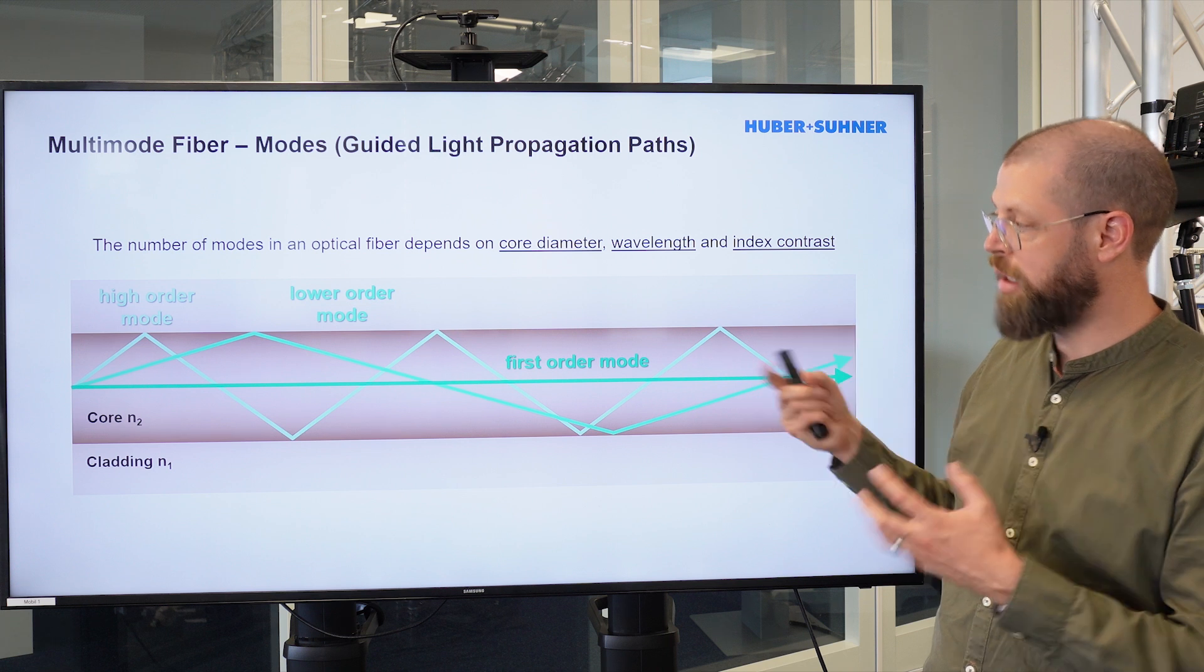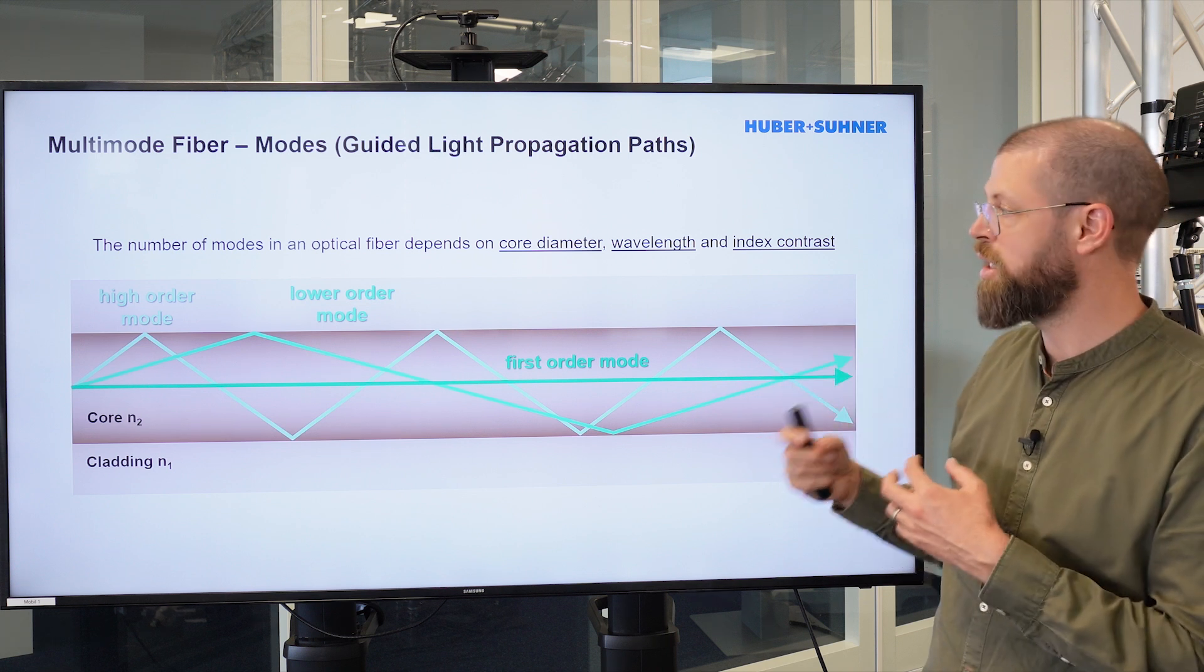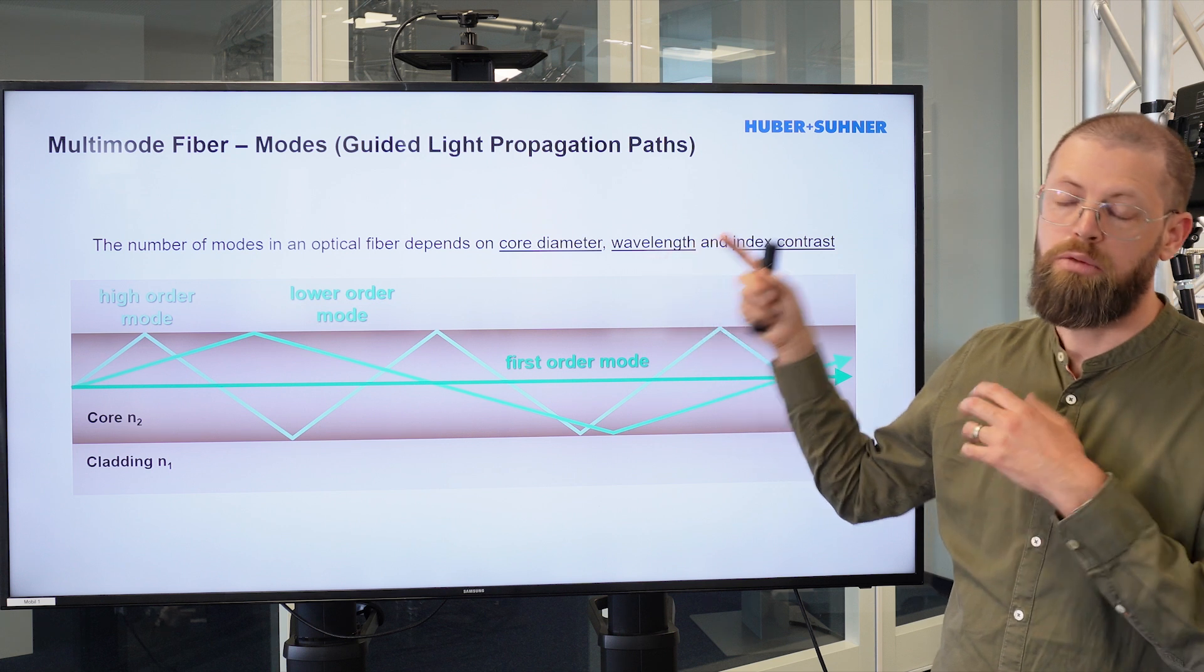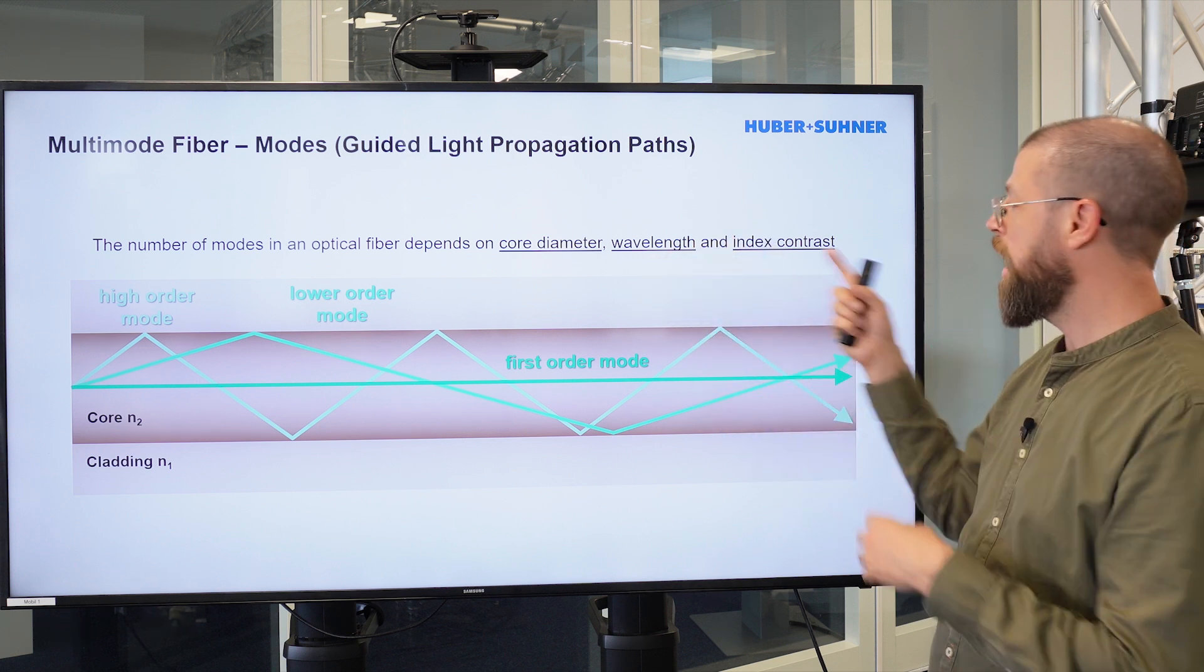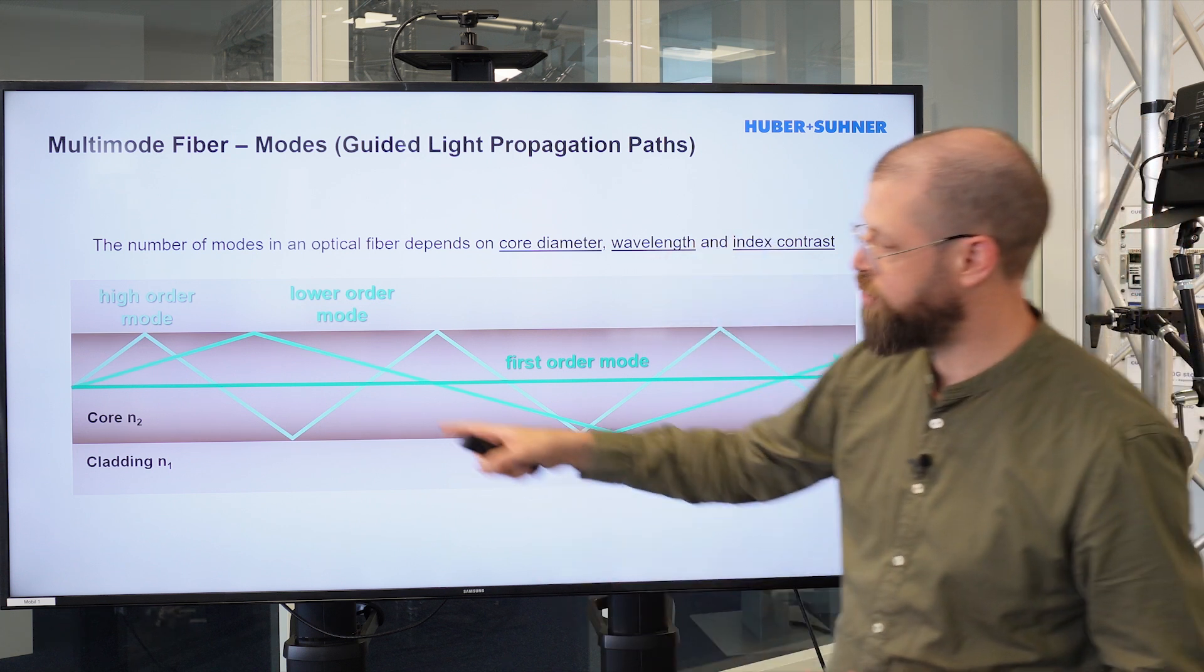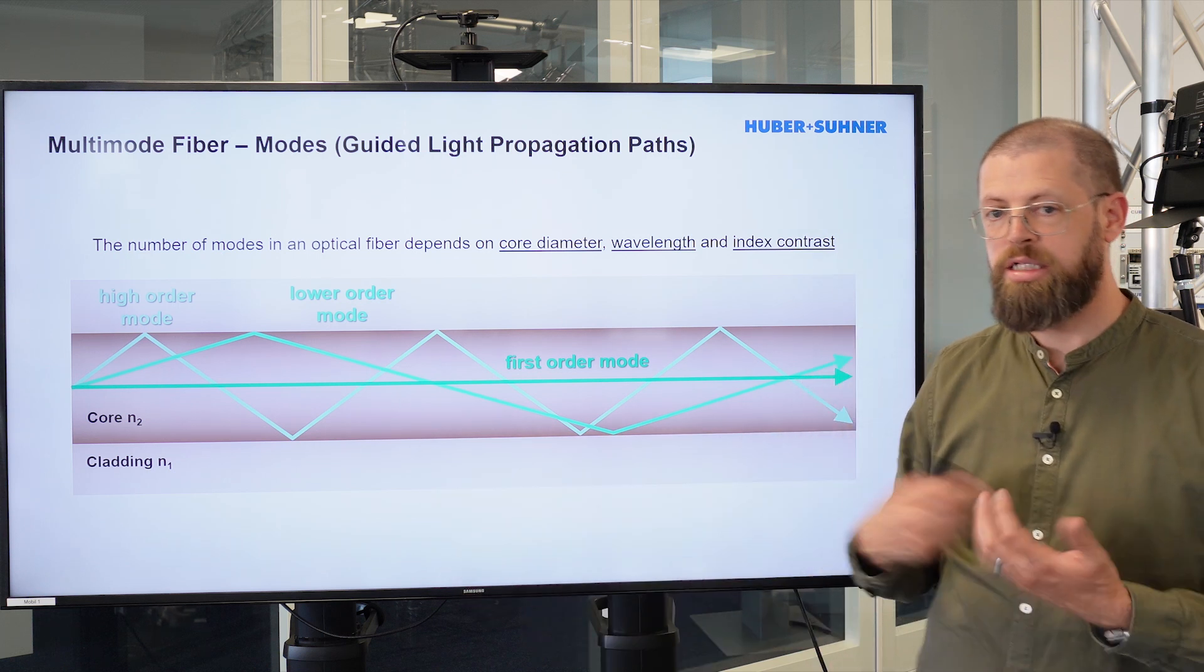The number of paths and the number of modes is determined by the core diameter, the wavelength of the optical signal, and also the index contrast between core and cladding.